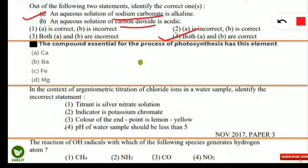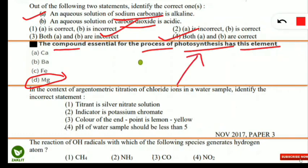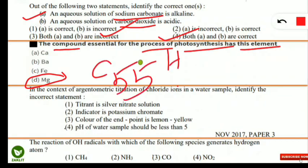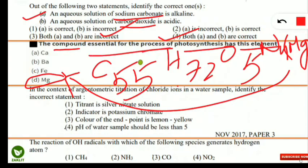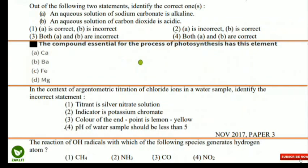The next question: the compound essential for photosynthesis contains which element? The correct option is magnesium, because it is part of chlorophyll. Chlorophyll a has the formula C₅₅H₇₂O₅N₄Mg, where magnesium is the central element. So magnesium is essential for the process of photosynthesis.